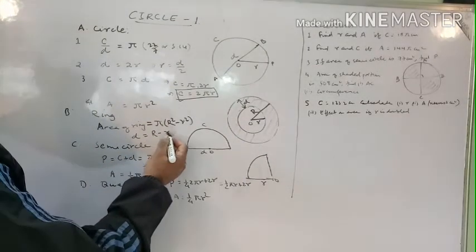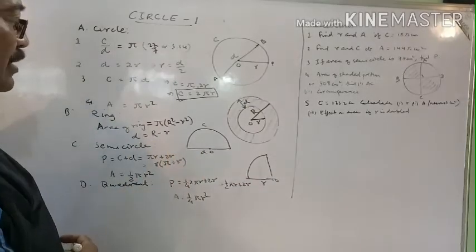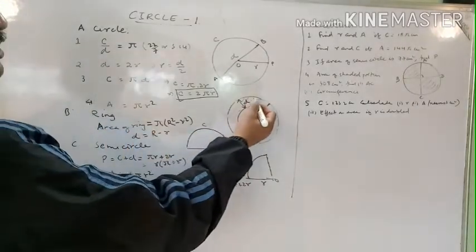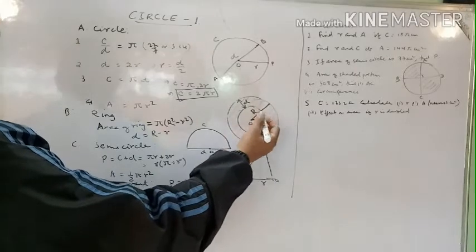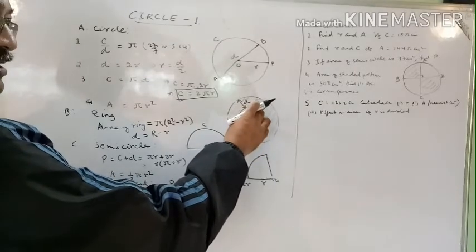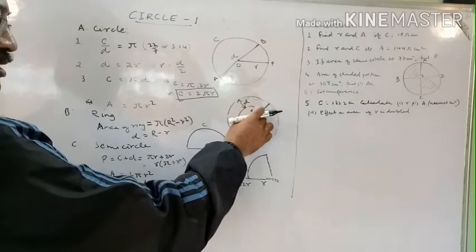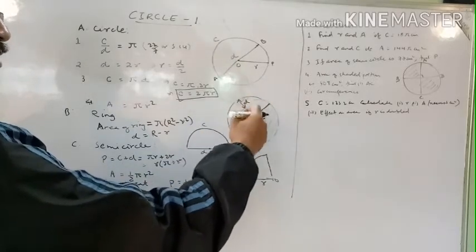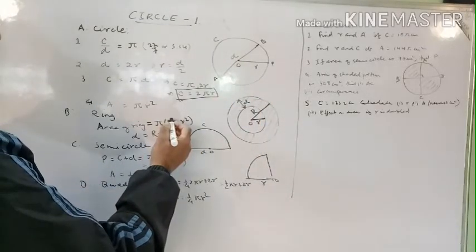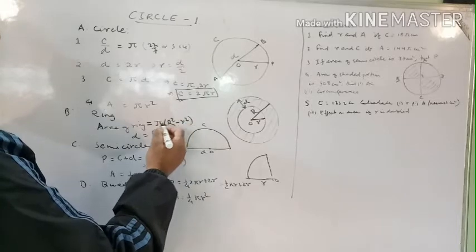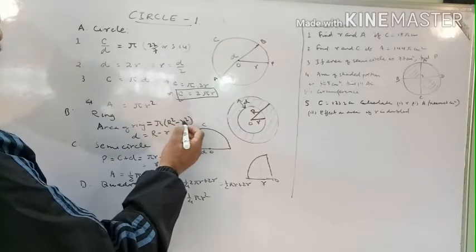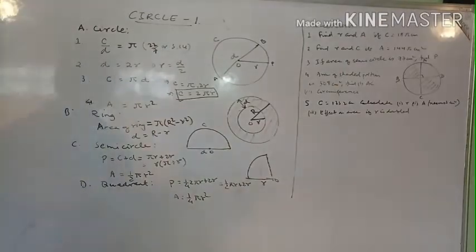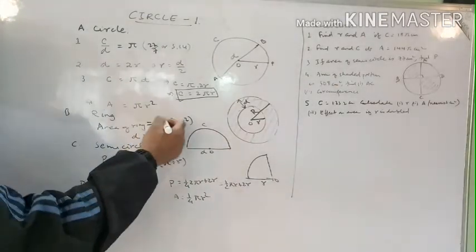The area of the ring is found by subtracting the area of the small circle from the area of the bigger circle. Area of bigger circle is πR², area of smaller circle is πr². Subtracting gives the area of ring formula: π(R² − r²).